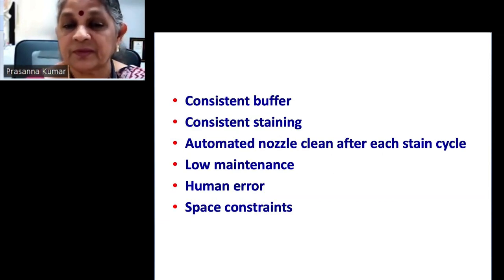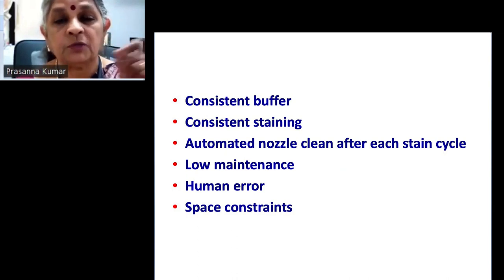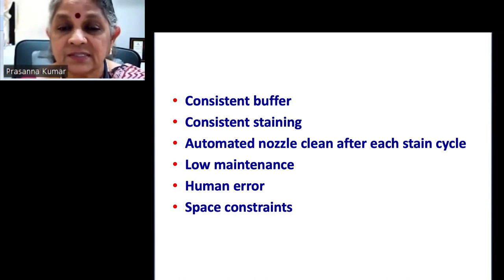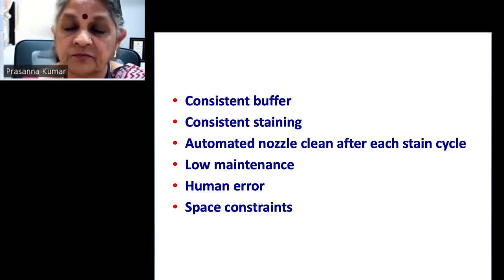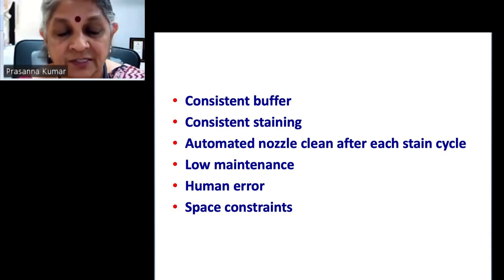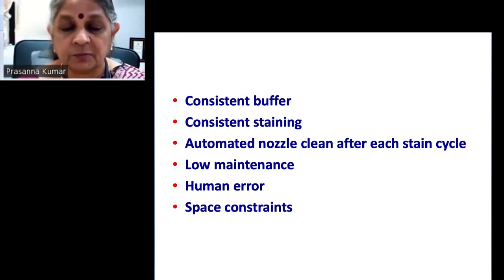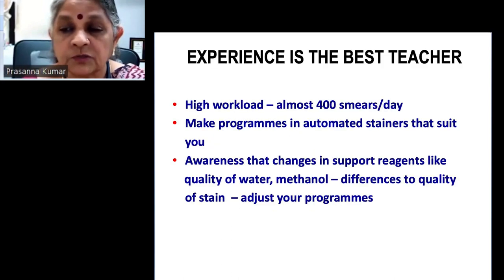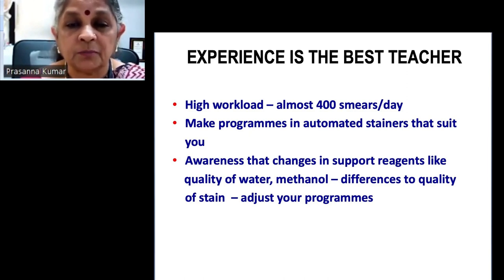There's consistent buffer and consistent staining via an automated nozzle — no more checking buffer pH with paper each morning or adjusting with acid or alkali. The nozzle is cleaned after each stain cycle, and this instrument has very low maintenance. Chances of human errors — forgetting to pH the buffer, not standardizing — are eliminated. The machine occupies only about one and a half by one and a half feet, so space constraints are also addressed.